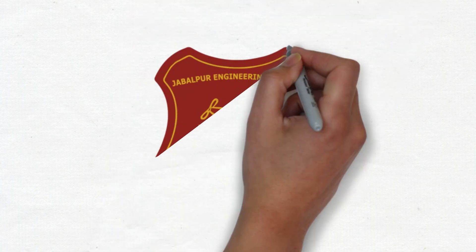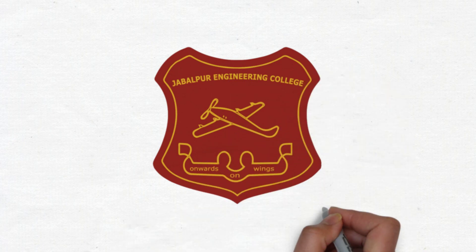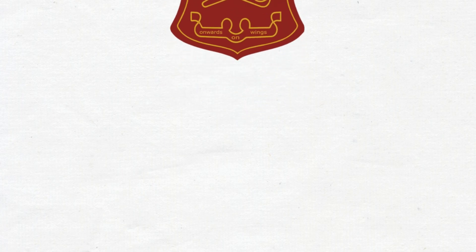India got its first electronics and telecommunication department in 1947 itself in Government Engineering College, Jabalpur, and four years later in 1951, the first TV transmitter was also installed there.